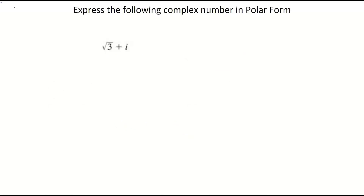The question wants us to express the complex number root 3 plus i in polar form. When we express a complex number Z in polar form, it's written as Z equals R times cos θ plus i sin θ. There are two things we need to find: R and θ.